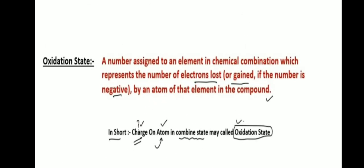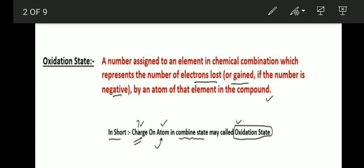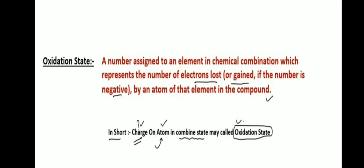What is the oxidation state? A number assigned to an element in chemical combination which represents the number of electrons lost or gained if the number is negative, by an atom of that element in the compound.